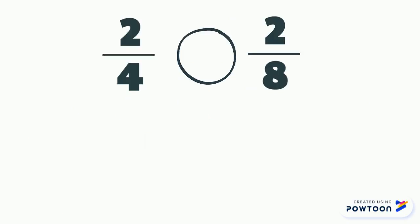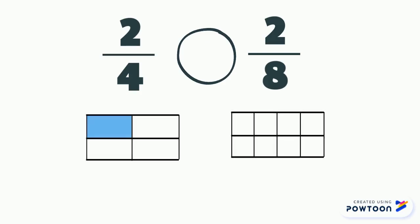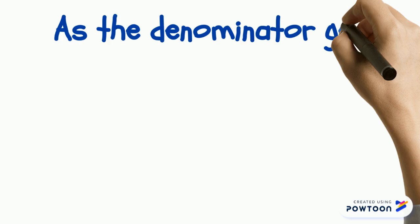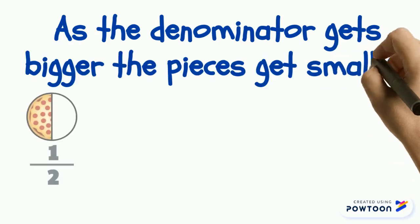Hopefully, your model looked something like this. We can read this statement as two-fourths is greater than two-eighths. Remember, as the denominator gets bigger, the pieces get smaller.